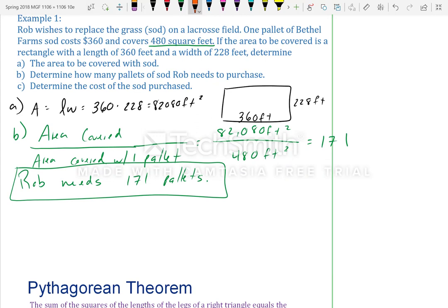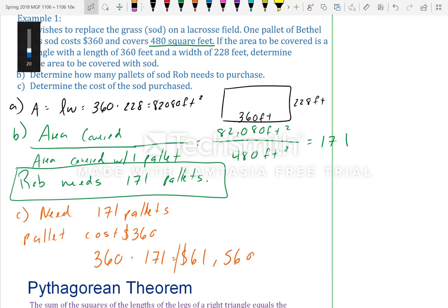So, how much is that going to cost him? Part C, determine the cost of the sod purchased. So, we need 171 pallets. A pallet costs $360. So, in order to determine the cost, we multiply how many pallets we need by the cost. So, 360 times 171, and we get $61,560. That is expensive.